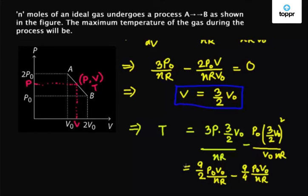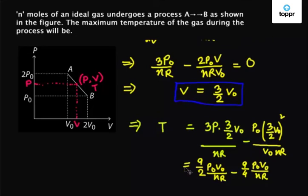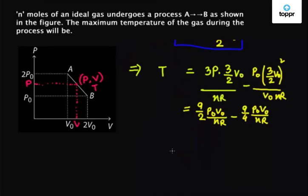Which gives us T equals 9/4 P0V0 / nR. So this is the maximum temperature of the gas during the process A to B.